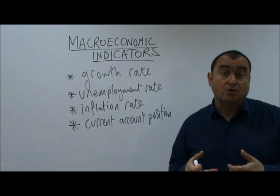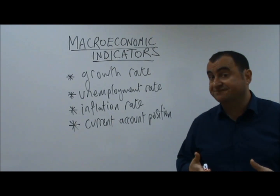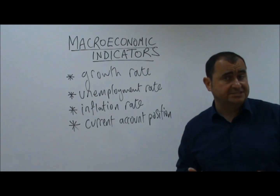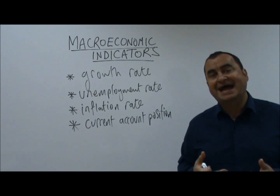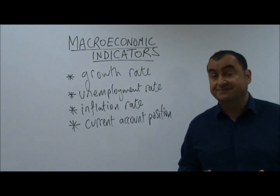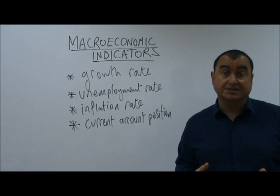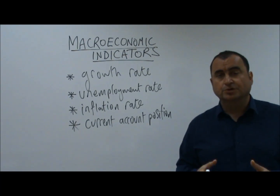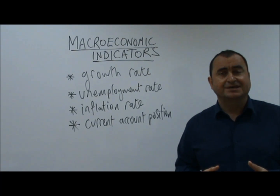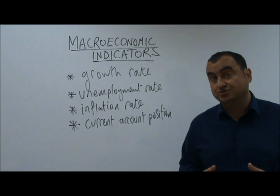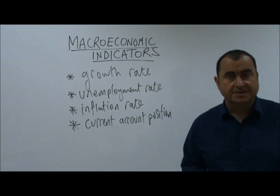A deficit indicates that more money is flowing out to pay for imports than is flowing in from exports. If a country buys more imports than it sells exports, there is a net outflow of money. If that net outflow is large and persistent, it is damaging for an economy. So governments and economists look carefully at the current account position, which indicates the competitiveness of a country as it trades in the global economy.